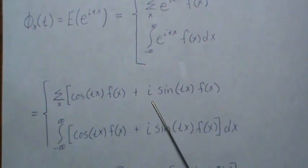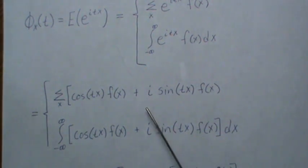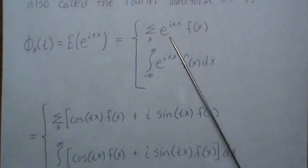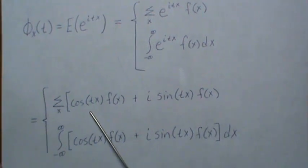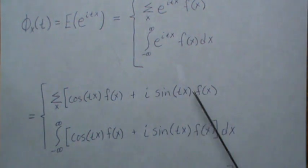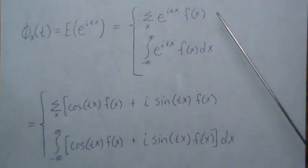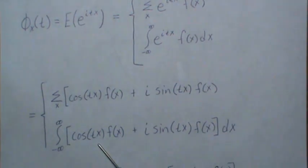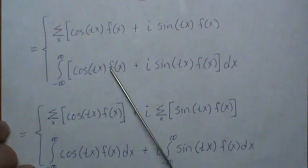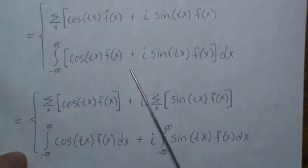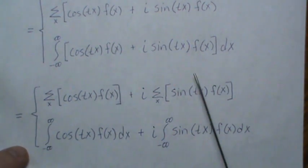Using Euler's identity, e^{itx} can be rewritten as cosine plus i times sine. There are many videos covering this — you take the Taylor expansion and use the properties of i to rewrite it as cosine and sine. We'll assume that's true. So e^{itx} equals that expression, and since we're integrating you can break the integral into pieces.